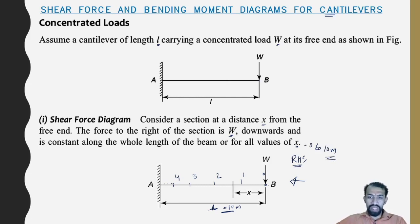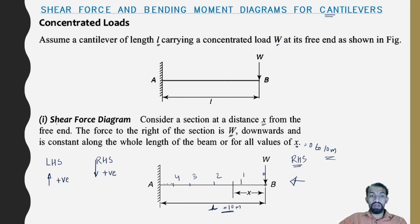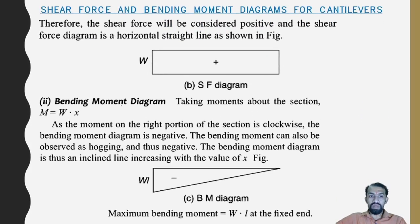Taking W from the right-hand side and applying the sign convention — from the right-hand side, a downward force is positive — the shear force is considered positive. The shear force diagram is a horizontal straight line because there is no additional load in this span.